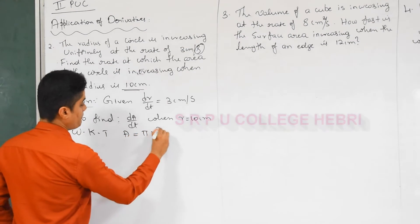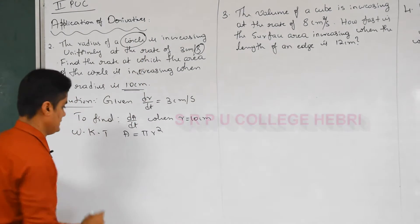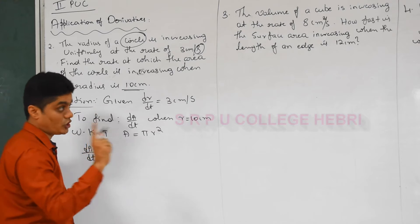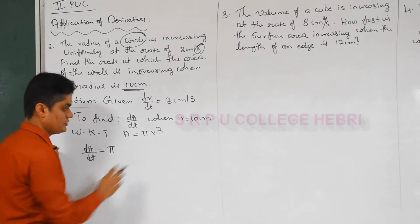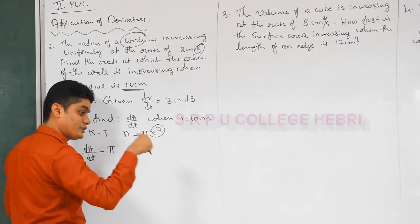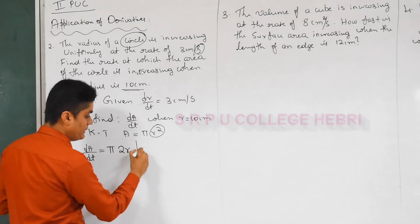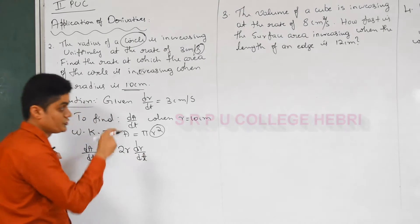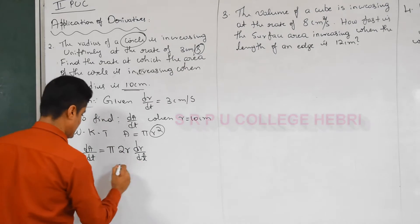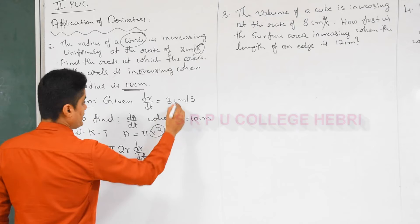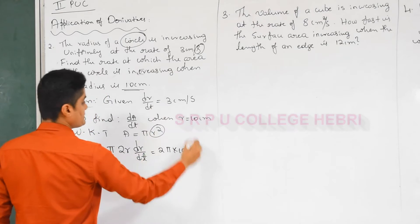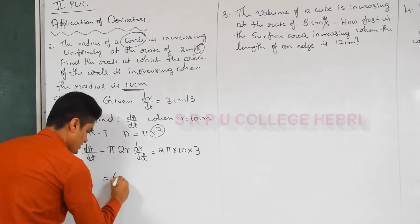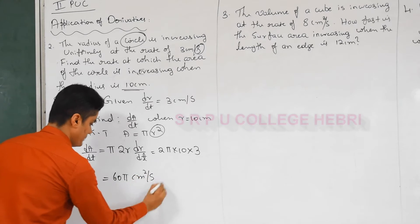We know that area A = πr². Differentiating with respect to time: dA/dt = 2πr · (dr/dt). Here r = 10 and dr/dt = 3. So dA/dt = 2π(10)(3) = 60π. The unit is centimeter square per second. That is a 5-mark question. The key difference from the previous problem is that here we differentiate with respect to time; the previous problem was differentiation with respect to radius. The formula and method are the same otherwise.